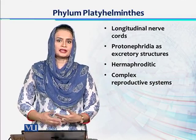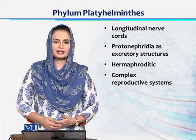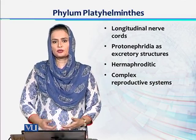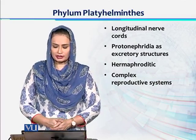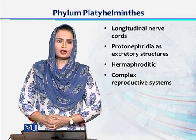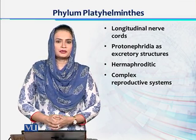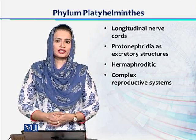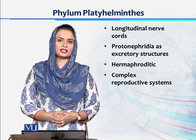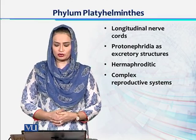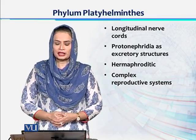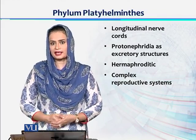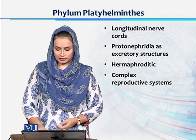Other than these anterior ganglia, they have a longitudinal nerve cord running through the whole body. Excretory organs are very primitive, called protonephridia. The reproductive system — these organisms are hermaphrodite or monoecious, and the reproductive structures are comparatively complex compared to Phylum Cnidaria.